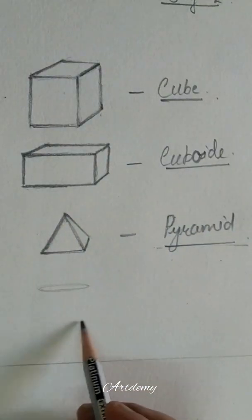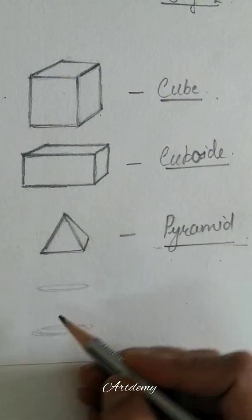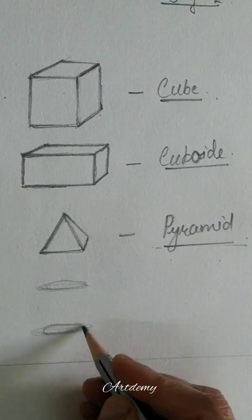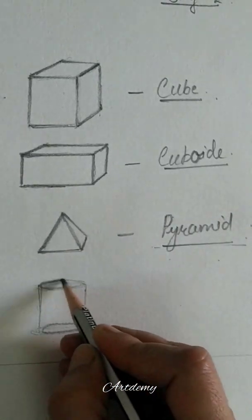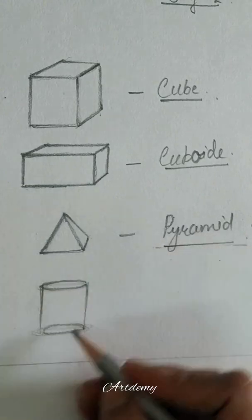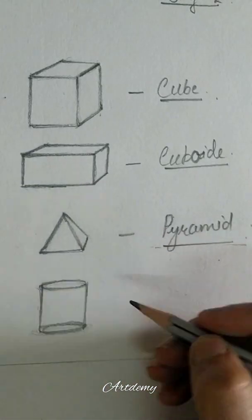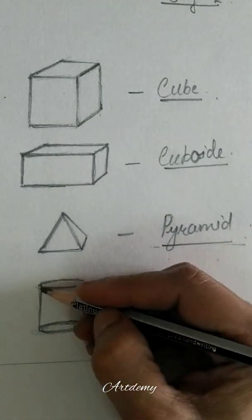Now we will draw a cylinder shape. So we have to draw these two circles, and then we will join these two oval shapes, not circles, with two lines like this.